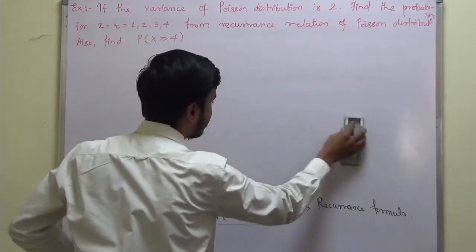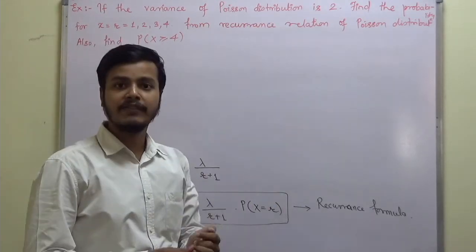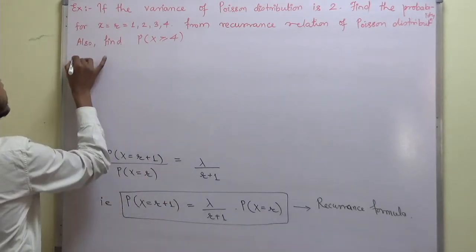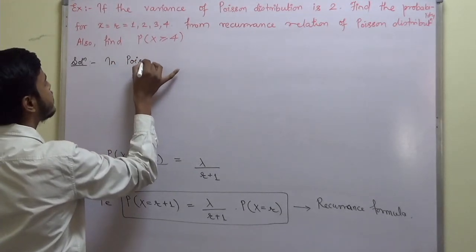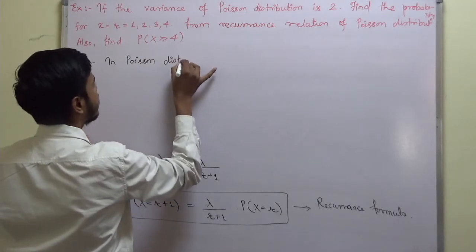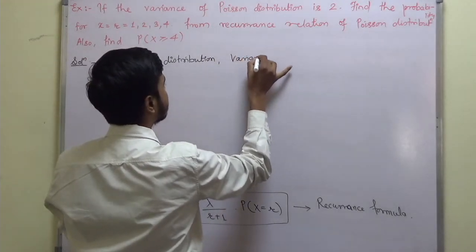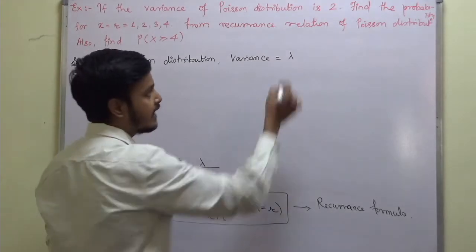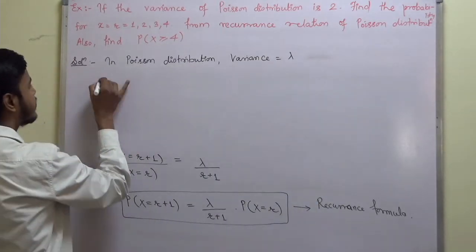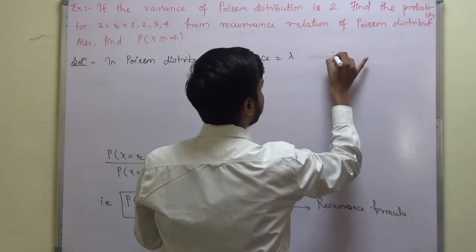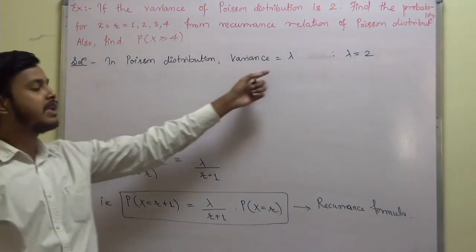The value of the parameter lambda is already given indirectly: the variance of the Poisson distribution is 2, and we know that in the Poisson distribution mean and variance are both equal to lambda. Therefore, variance equals lambda, and since variance is 2, lambda equals 2.